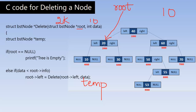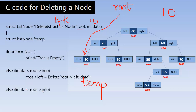Now root is pointing to the node at address 4000. Is root equal to null? No. Is data less than root arrow info? Root arrow info is 10. Is 10 less than 10? No, the condition fails. Is data more than root arrow info? No — data equals root arrow info. If it is neither less than nor greater than root arrow info, then we have found the element.